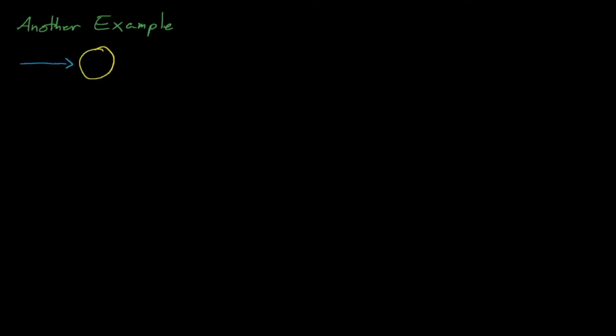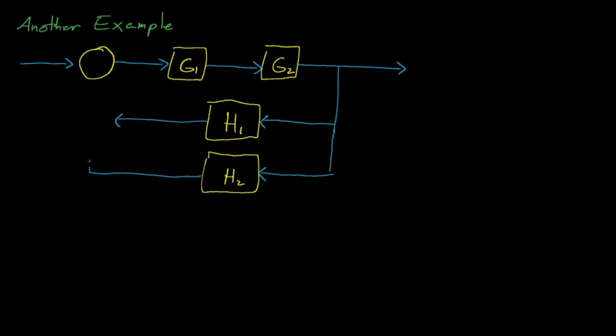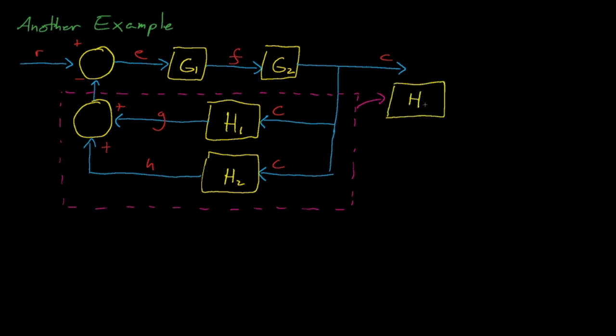Here's another example where our signal is split into parallel components. This complicates our math slightly, but we just need to define a surrogate feedback element Hx and simplify our model until it looks like some form that we know how to solve.